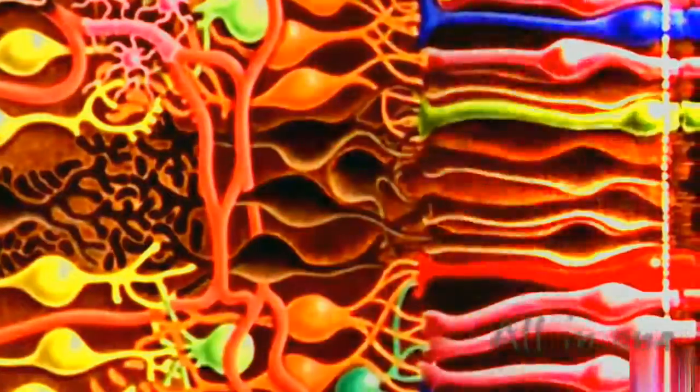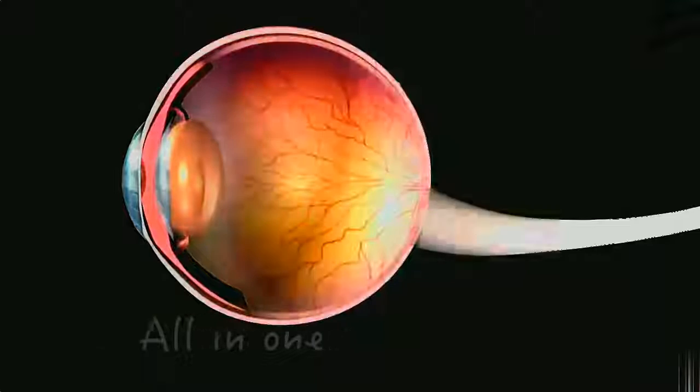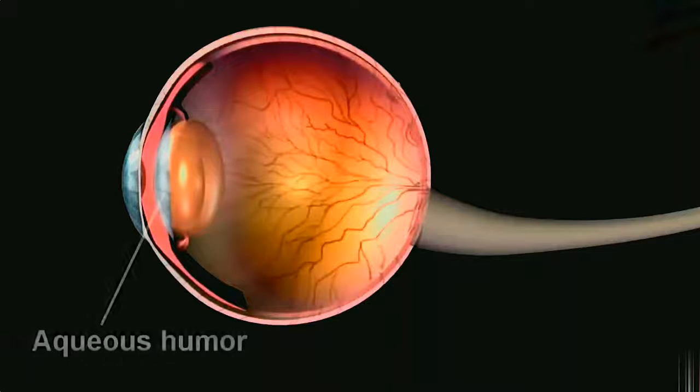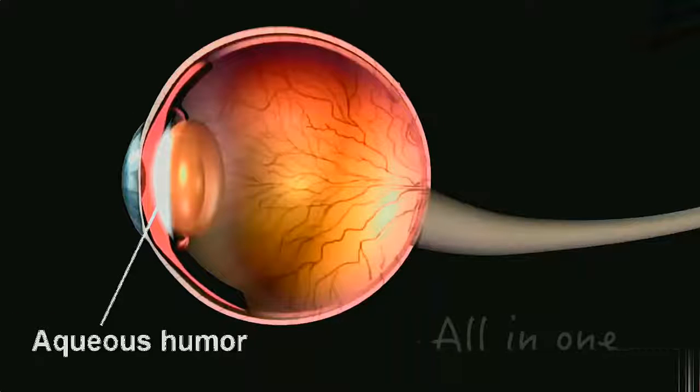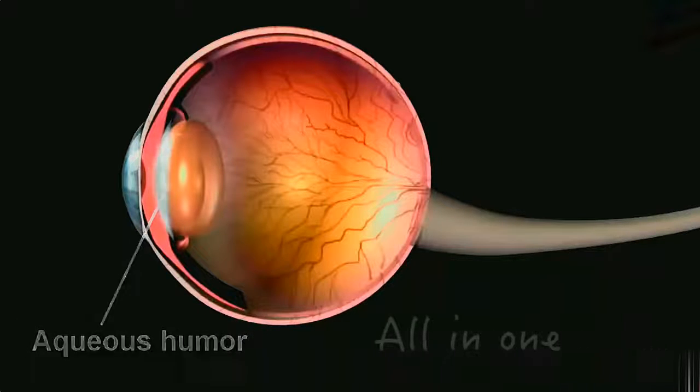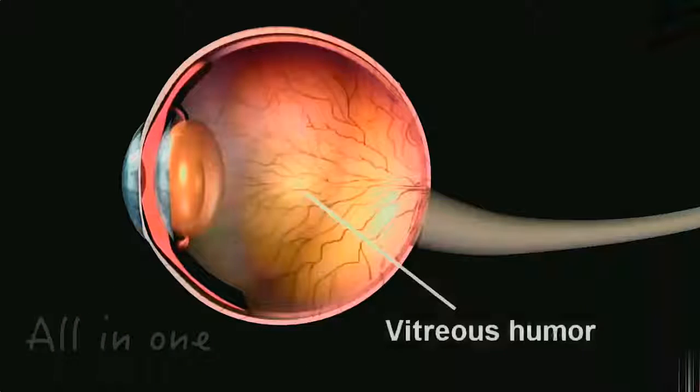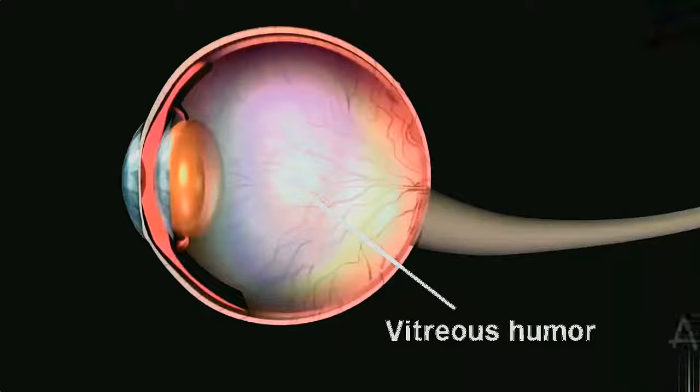Between the lens and the cornea is the aqueous humor, consisting mostly of water and a little salt. The largest space within the eye is filled with vitreous humor.